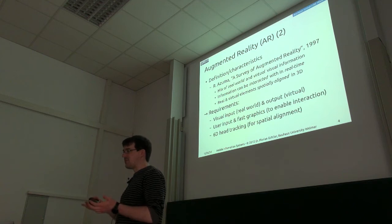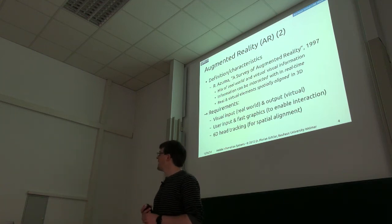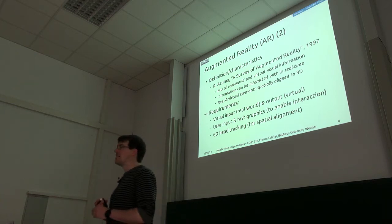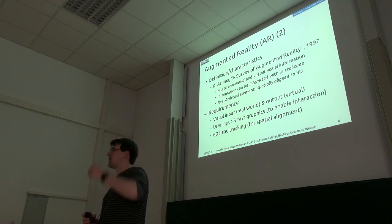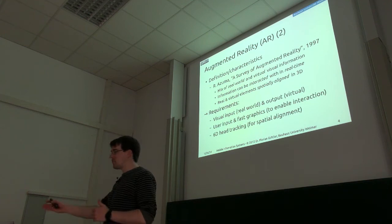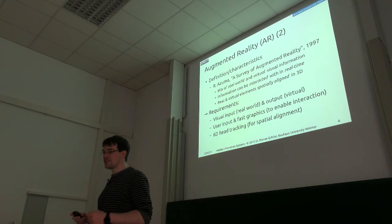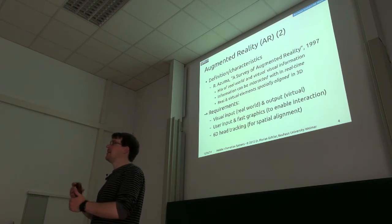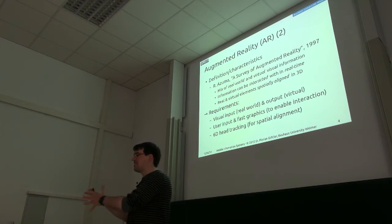So that some virtual object is actually spatially connected to something in the real world. So I need some kind of visual input and output, especially output, of course. For interaction, I need some kind of tracking or input device at least. And very important, I need six degrees of freedom head tracking so I can actually make the alignment. So I need to know where the user is relative to the real world and especially where the viewpoint of the user is so that I can then render the virtual graphics in such a way that they look spatially aligned.